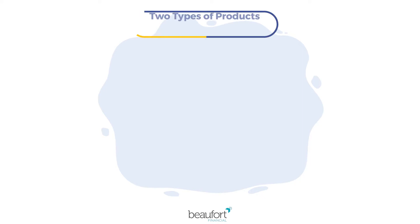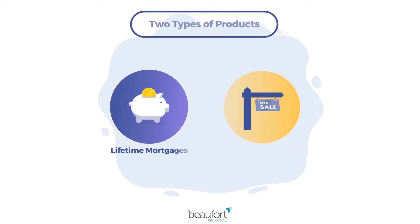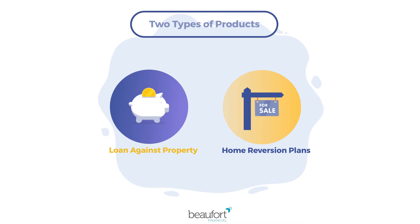There are two main types of Equity Release products, which are called Lifetime Mortgages and Home Reversion Plans. Lifetime Mortgages are where you take a loan against your property. Home Reversion is where you sell a part or all of it.